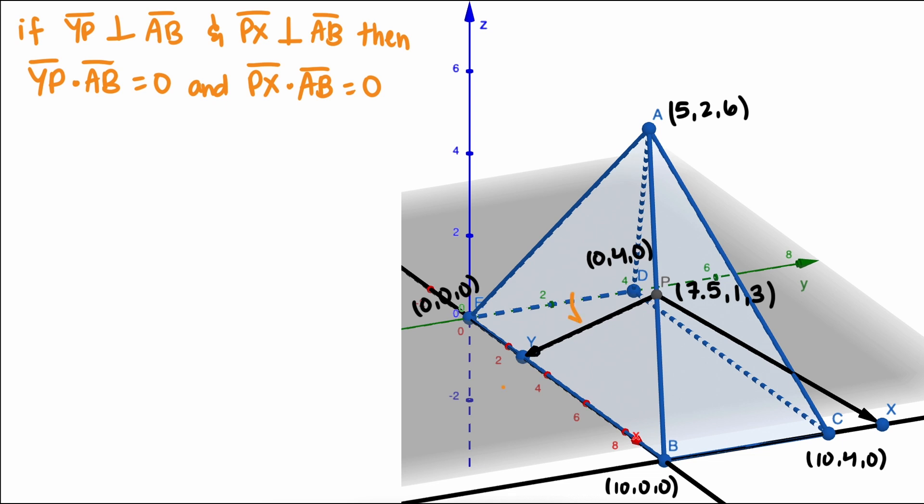Now we don't know YP or PX yet, but we can find AB. It's the difference between point A and B, which gives us vector negative 5 to 6.